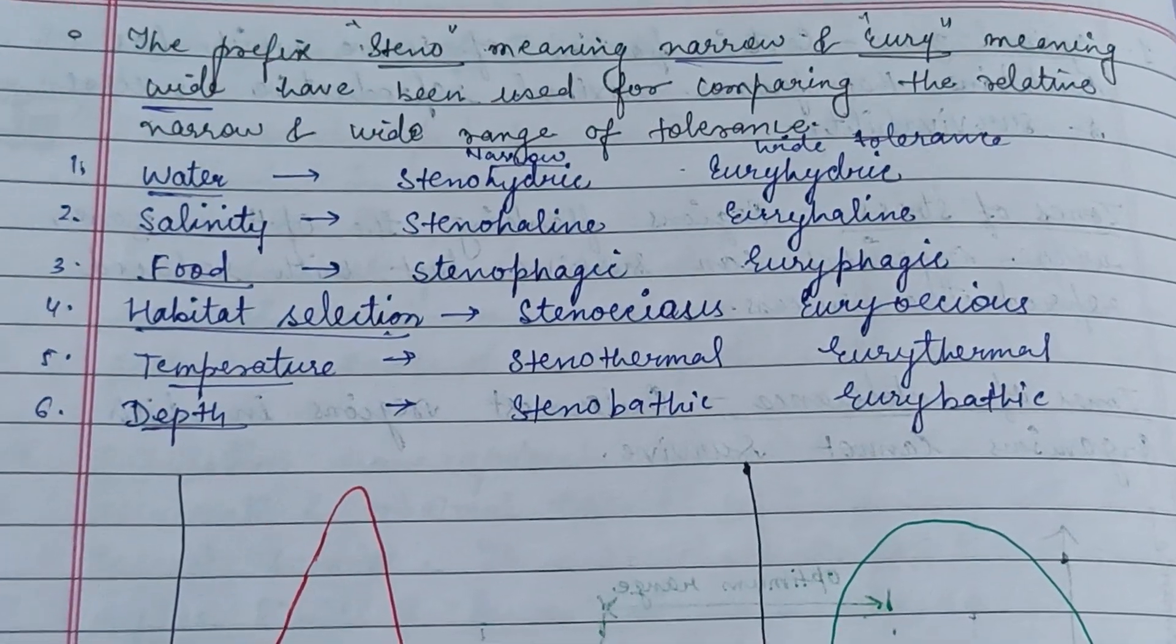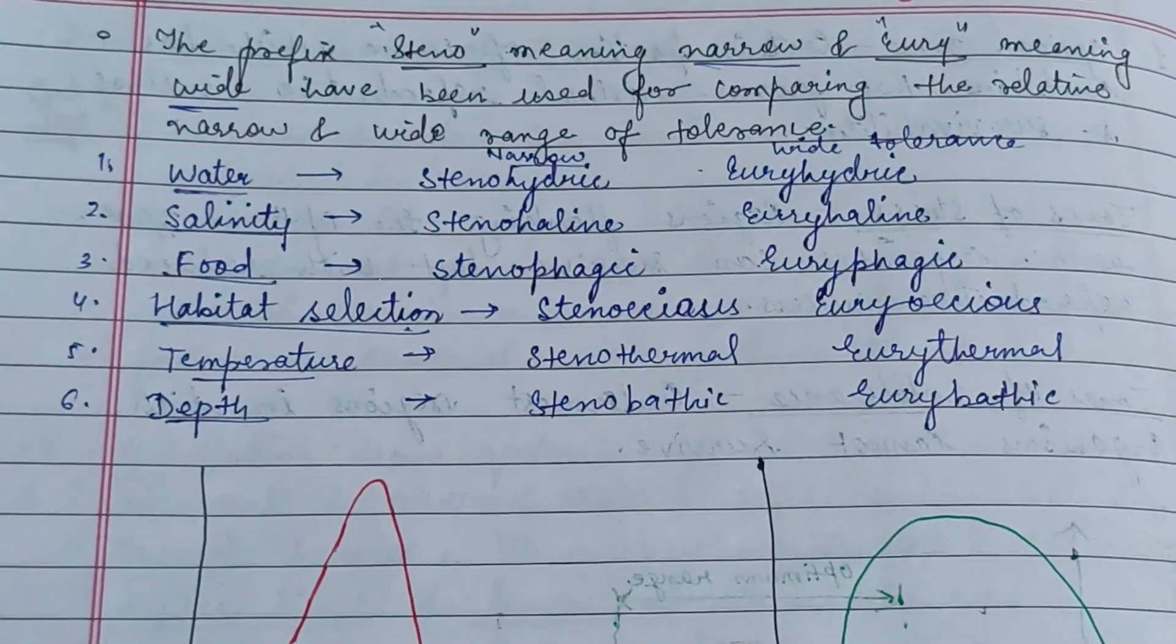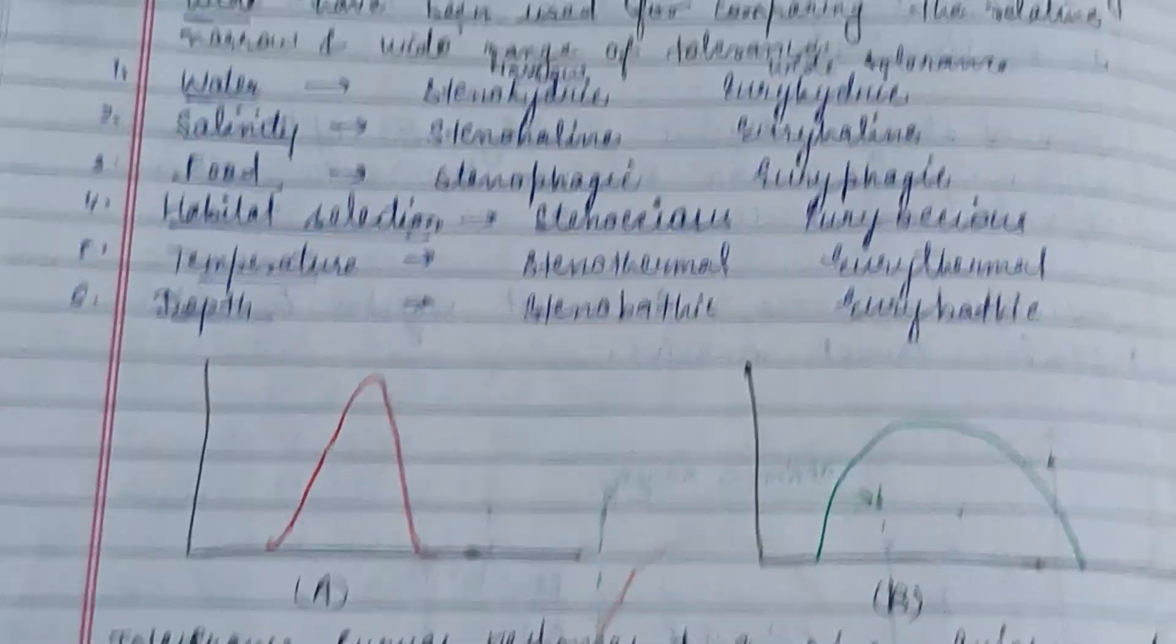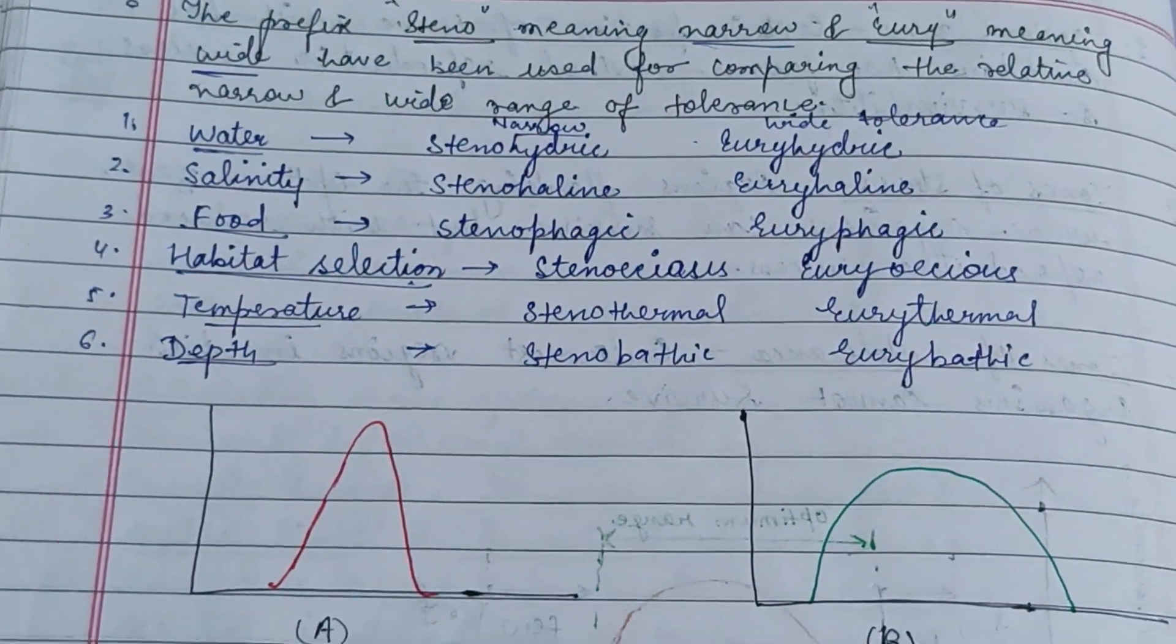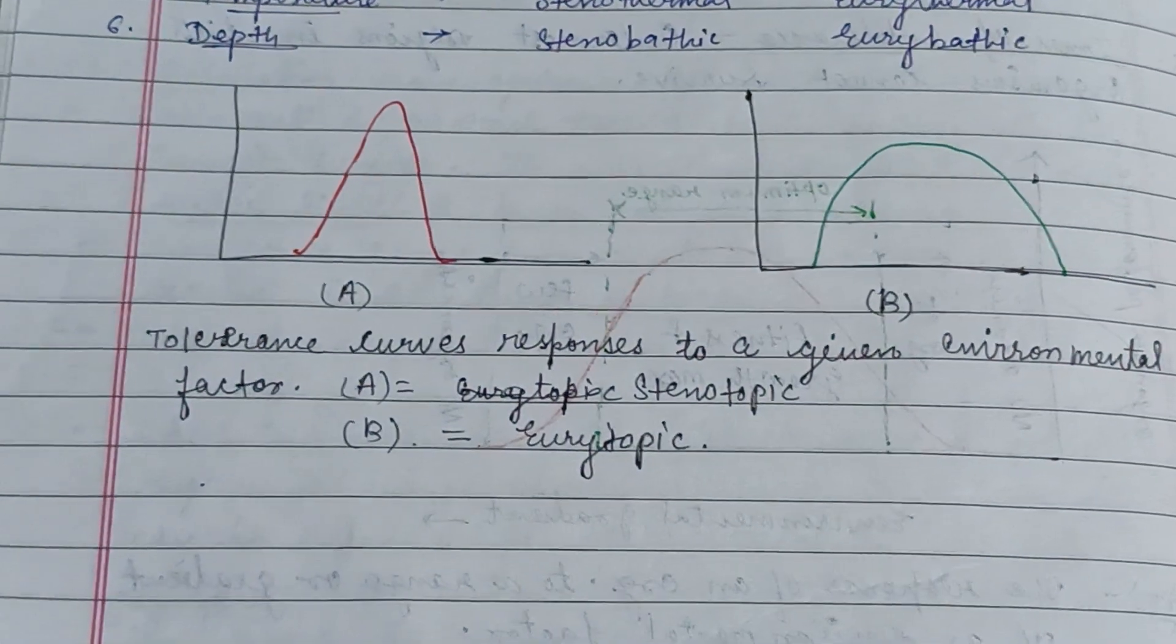Here are prefixes added to words: stenohydric, eurohydric, stenohaline, euryhaline. Steno means narrow and euro means wide range of tolerance.